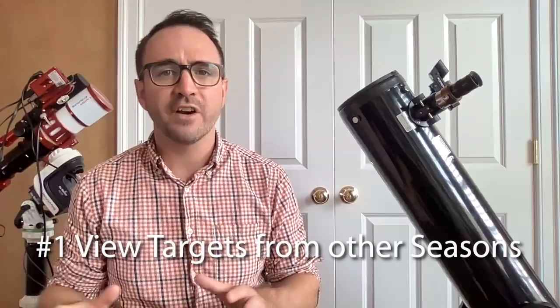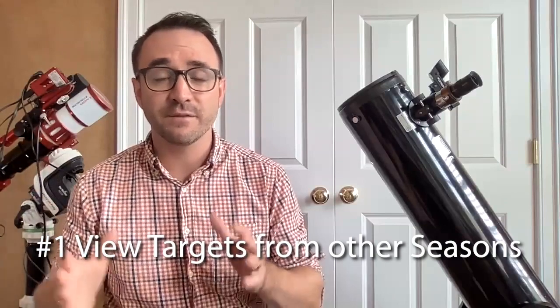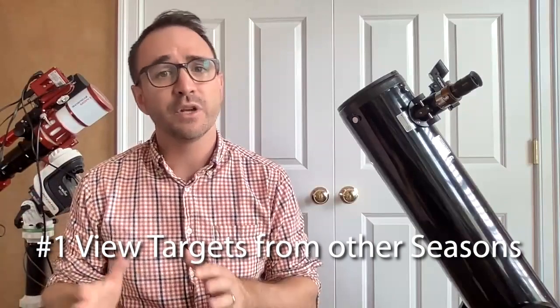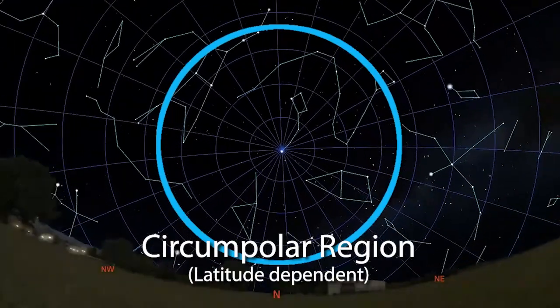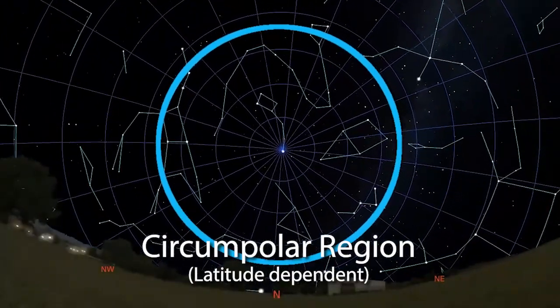Some tips and tricks on completing the list and earning your certificate: generally, there are about two seasons worth of targets visible on a given night. You can often catch objects from the previous season right after sunset. And if you stay up late enough, the targets from the upcoming season will rise above the horizon. Also, targets located near the north celestial pole in what we call the circumpolar region are above the horizon every night and all year.